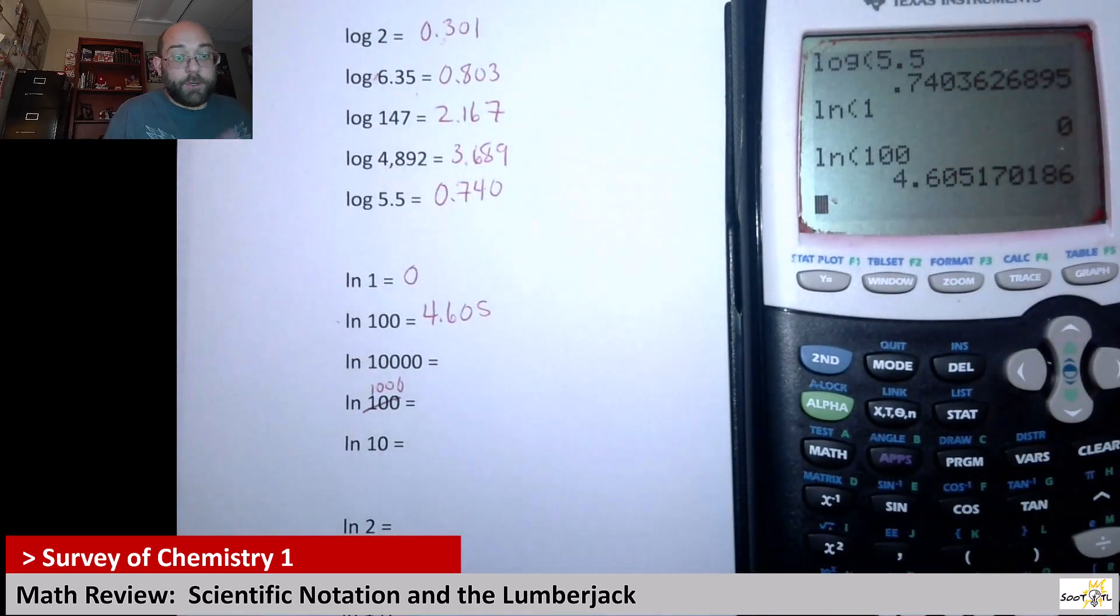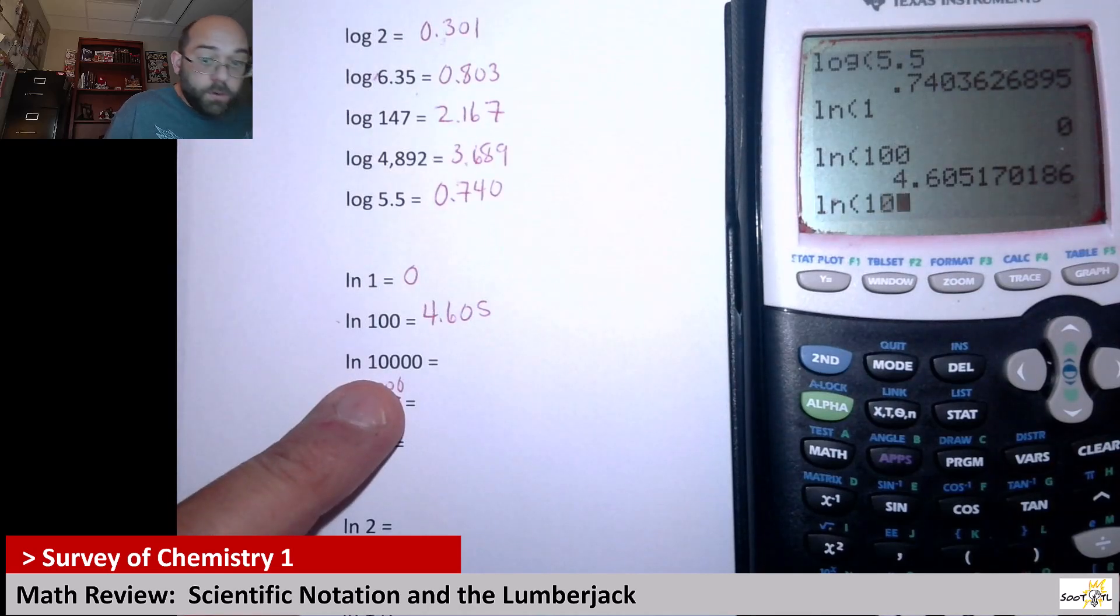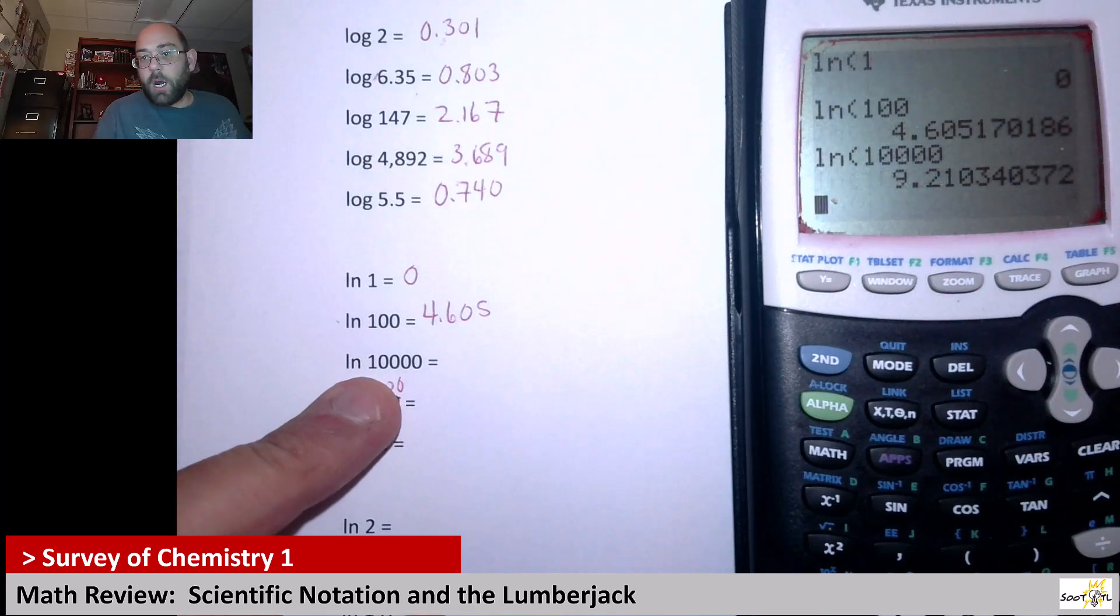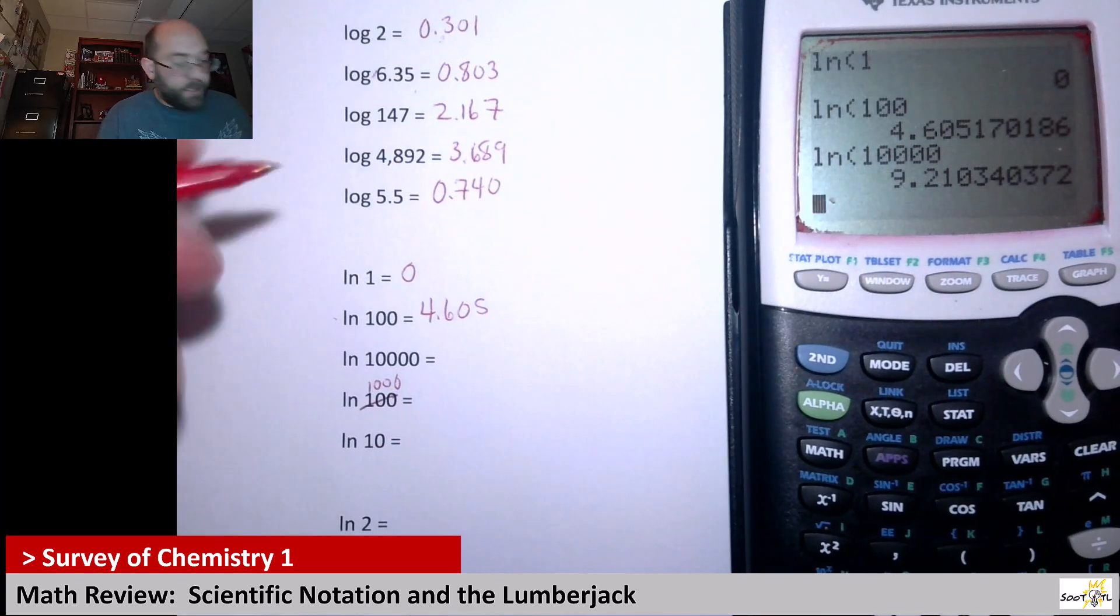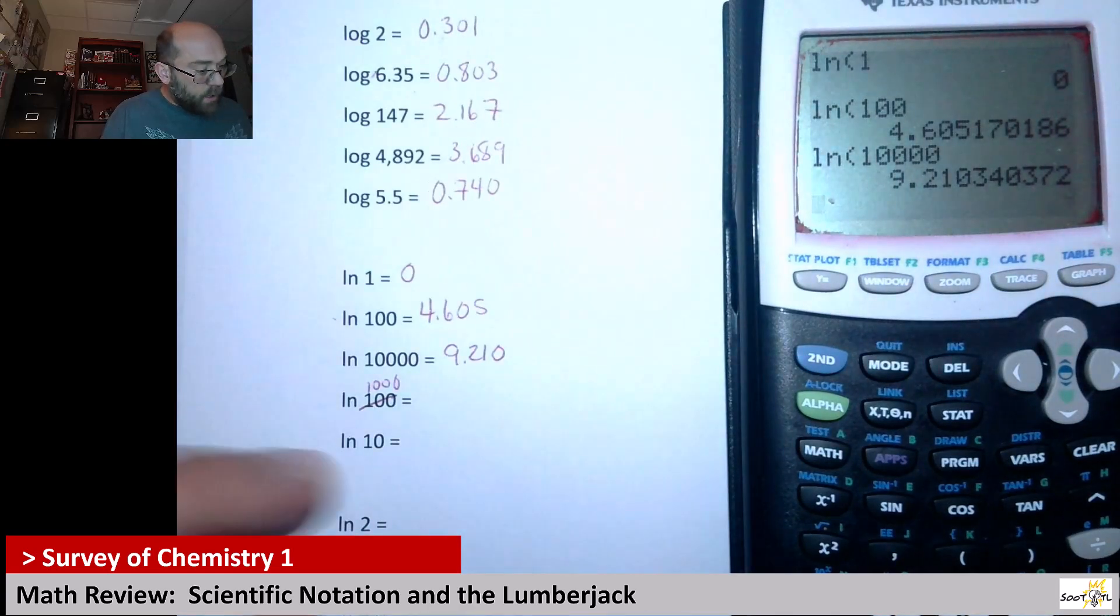So you want to be able to do both of these on your calculator. So now let's look at natural log of 10,000. So it's 1,000. There you go. 10,000. What do I get? 9.210.